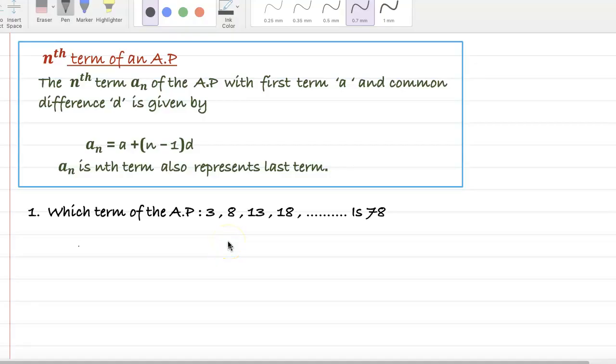Hi, welcome to the chapter Arithmetic Progression. The topic is nth term of an AP. Please watch the previous lesson. Let us begin this question: which term of the AP 3, 8, 13, 18, etc. is 78?